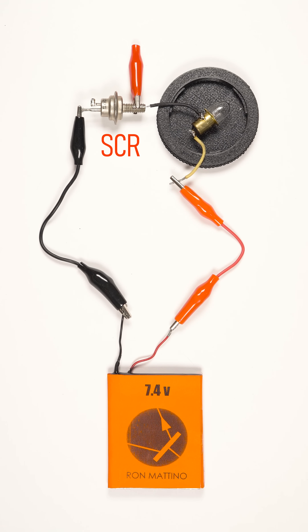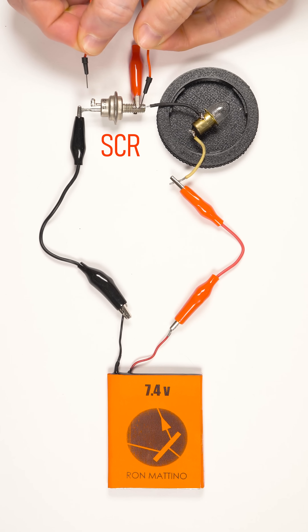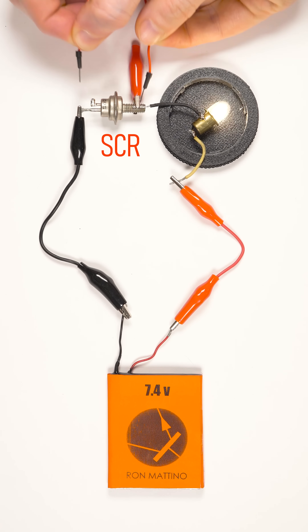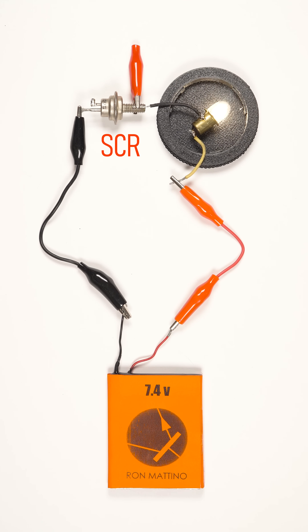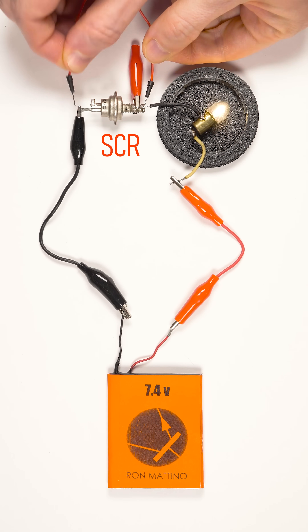An SCR is a semiconductor which latches once triggered by an external signal. The light bulb wired in series with an SCR is off, but if I short the gate with a node, the bulb glows. To turn the SCR off, you have to short it.